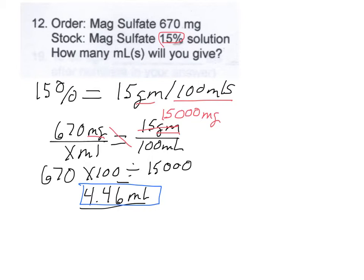Another way you can do this, as I mentioned, we can do a DHQ and I'm going to go over here and do this in blue. DHQ is your dose divided by what you have times the quantity, and that will give you your dose.